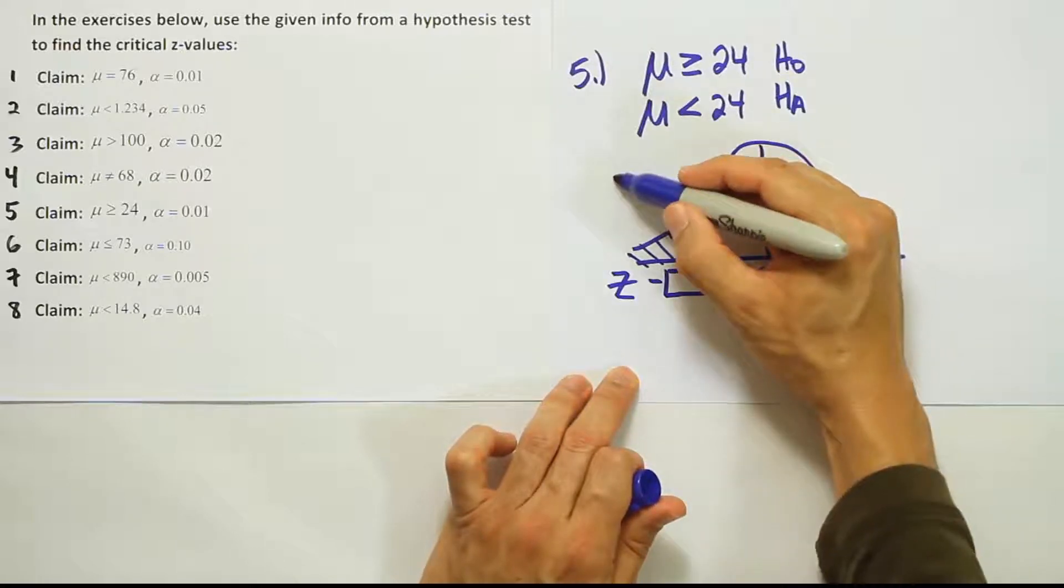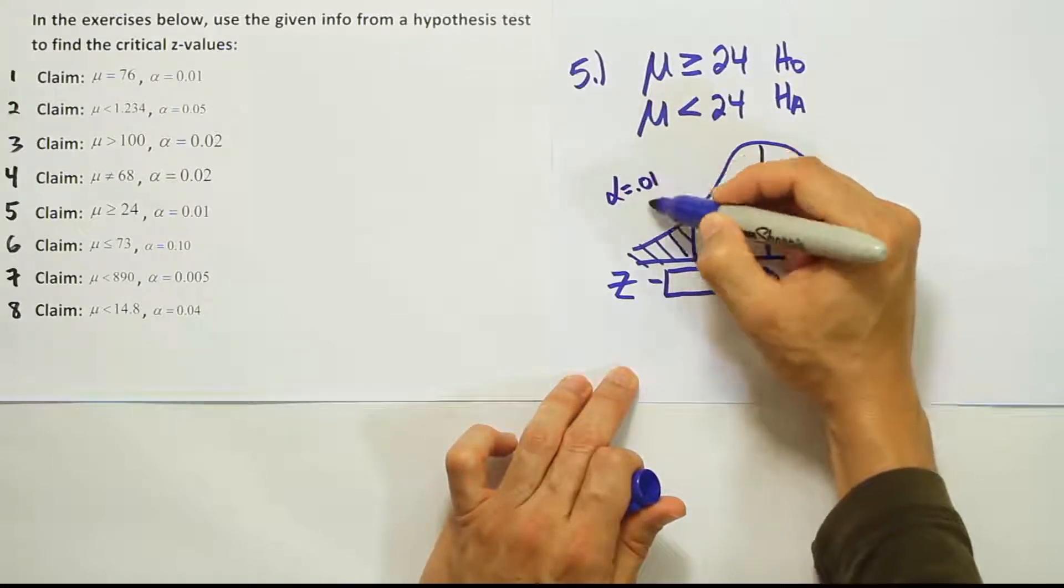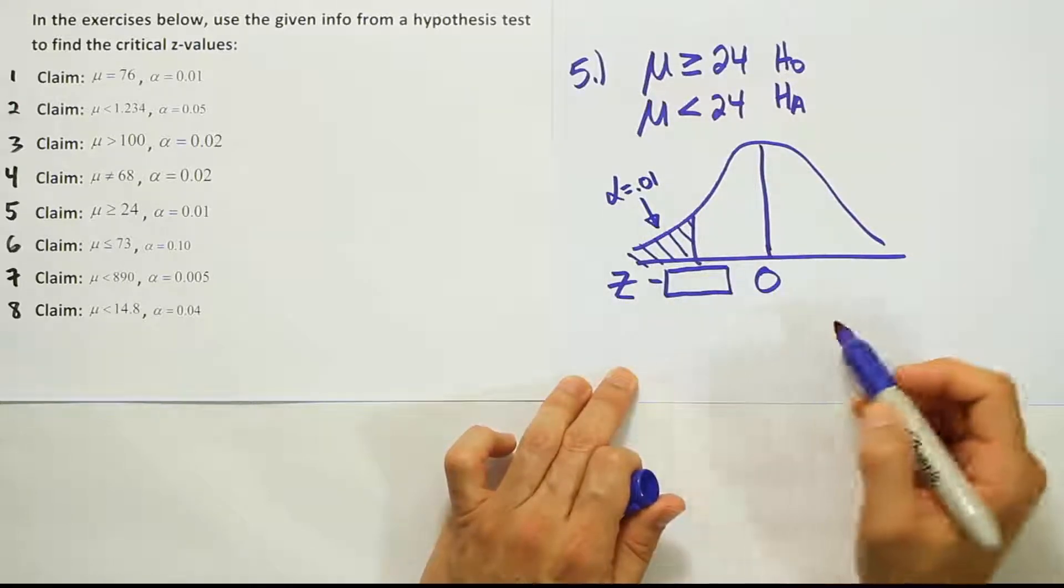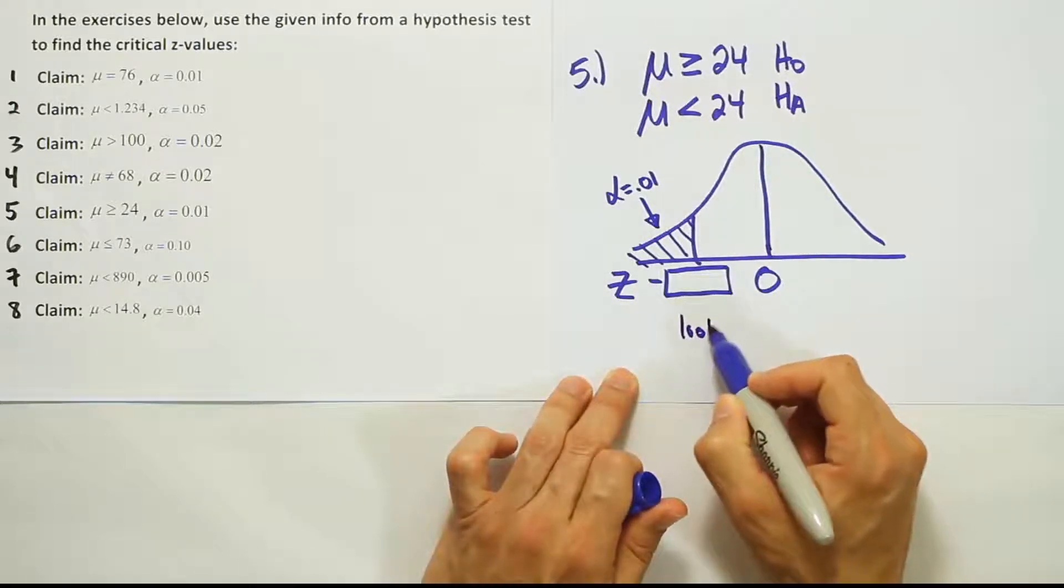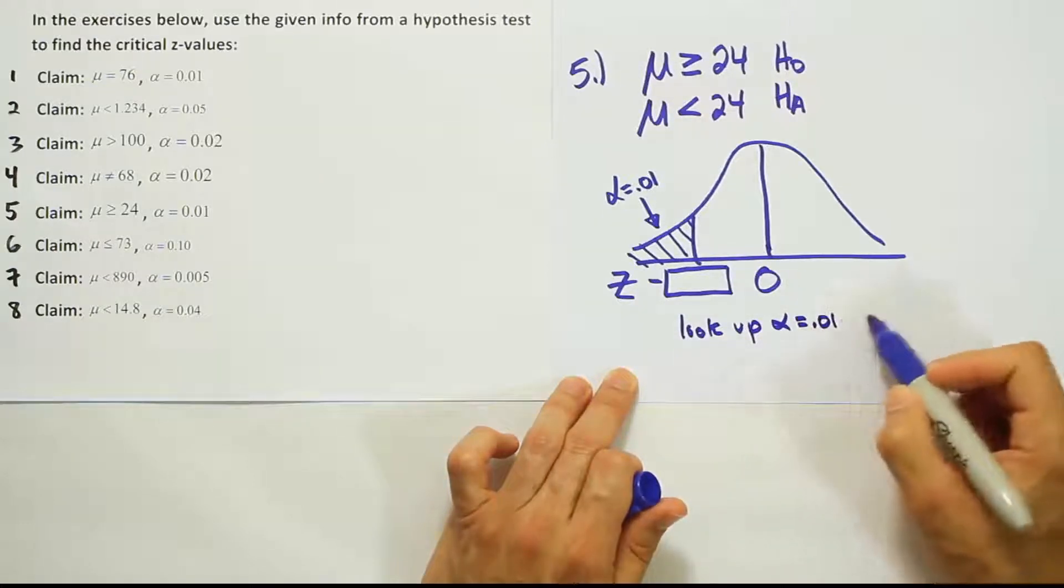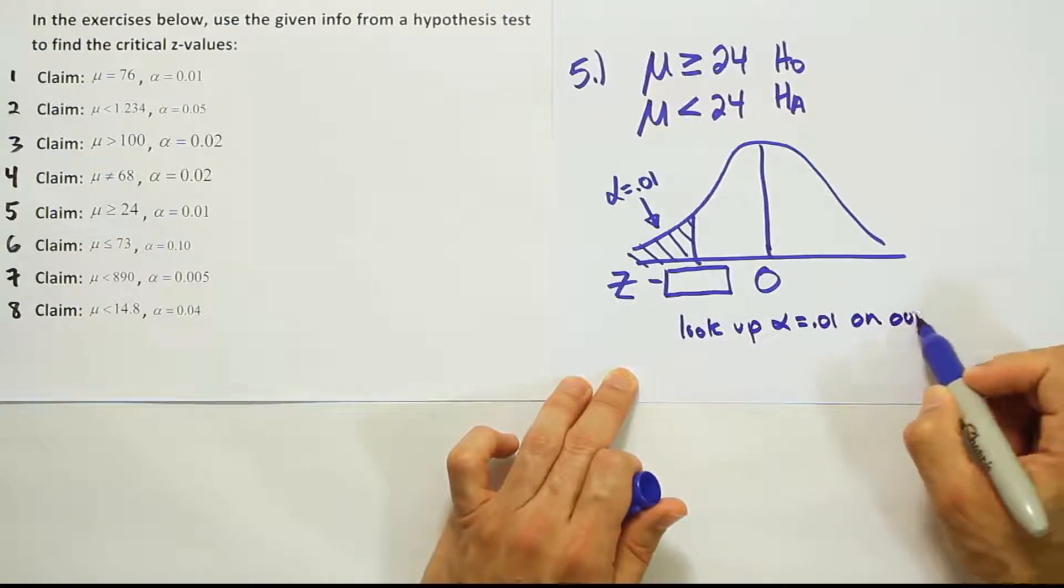Right, so number five here, we have alpha is equal to 0.01. That's all going to be in one tail because there's only a one-tailed test going on. So we're going to look up alpha equals 0.01 on our t table.